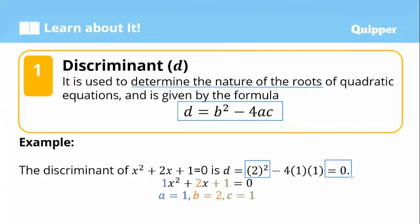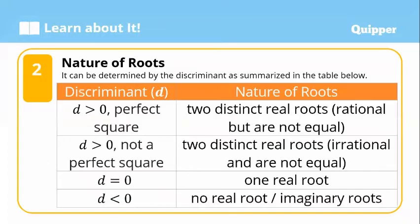It's very important to identify correctly the values of A, B, and C. You can re-watch the video on illustrating quadratic equations, as it's part of the first learning competency in Mathematics 9, which covers finding the values of A, B, and C. Let's proceed — we also have the nature of the roots, which can be determined by the discriminant as summarized in the table.